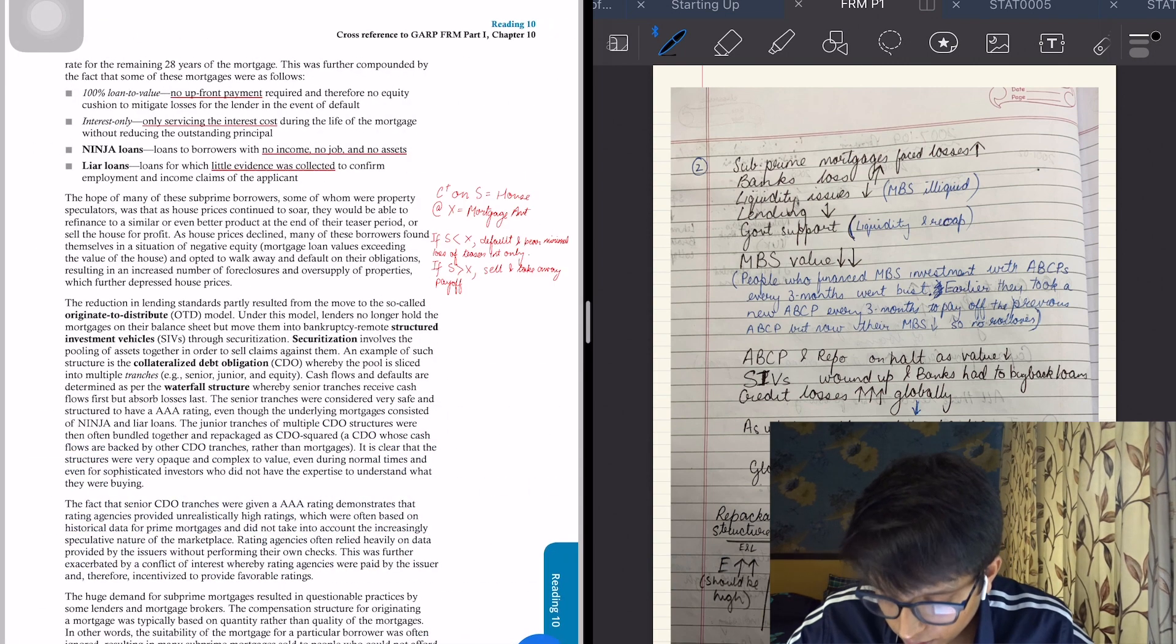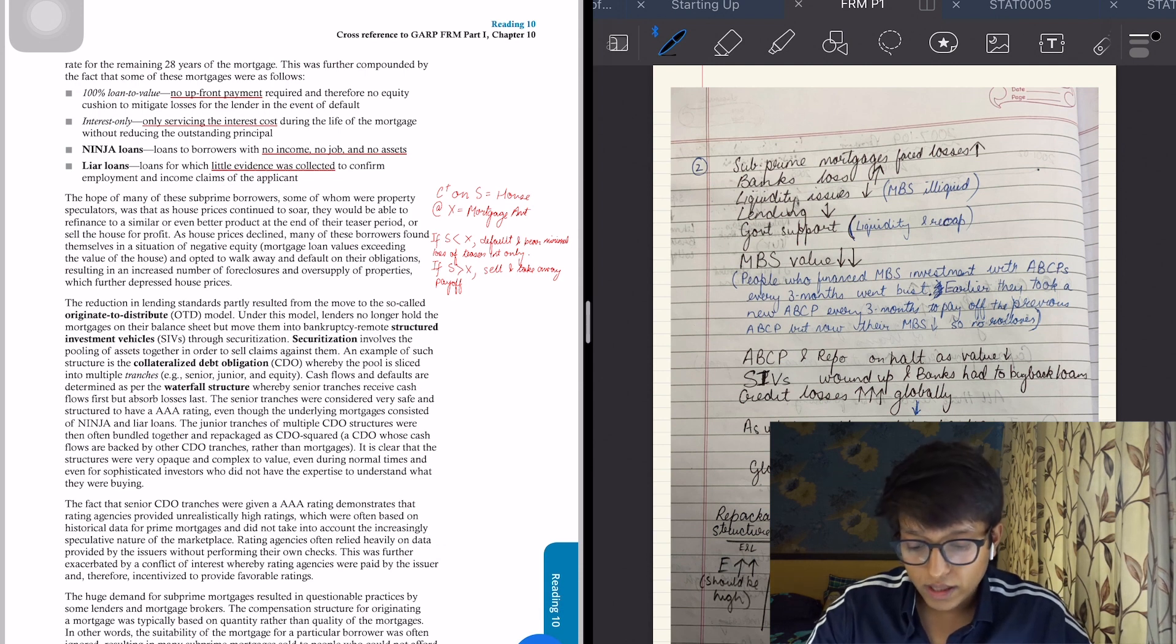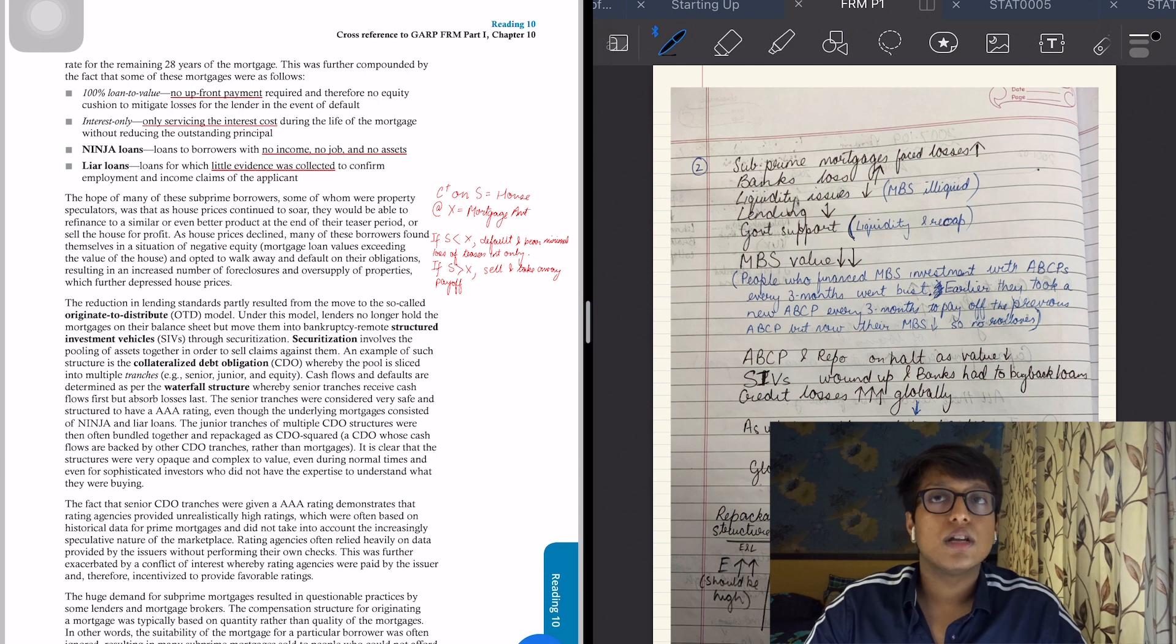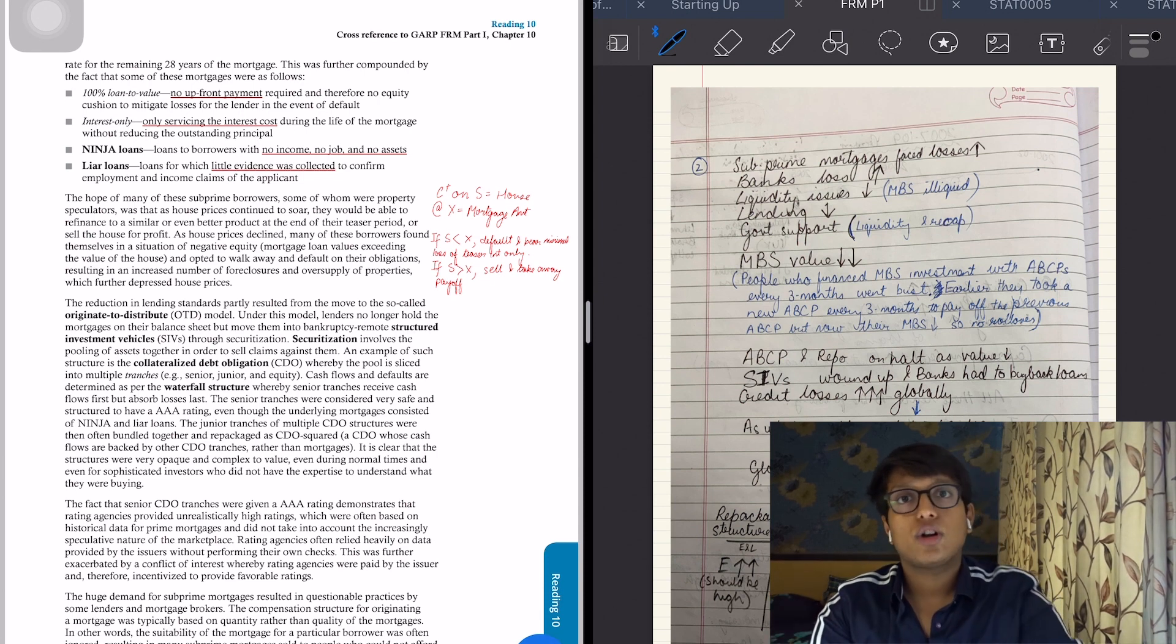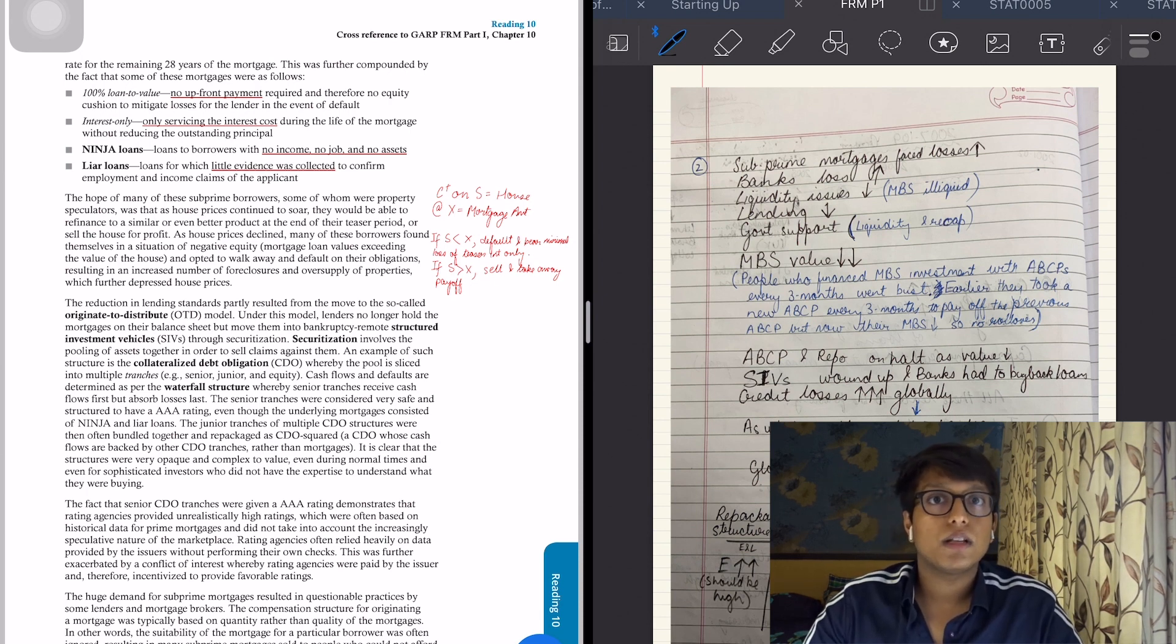These are risky investments - NINJA loans: No Income, No Job, No Assets. People did not have anything but they were getting loans. You should watch that movie The Big Short. Then there were liar loans - people had to give evidence that they would be able to repay the loan, but banks did not care. They did not take any evidence from them, and even if they took it, they did not verify that evidence.